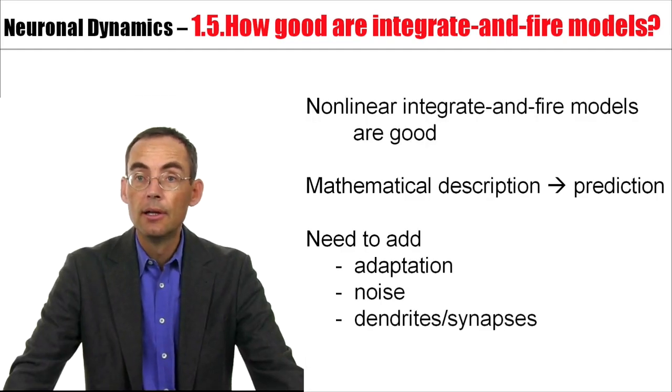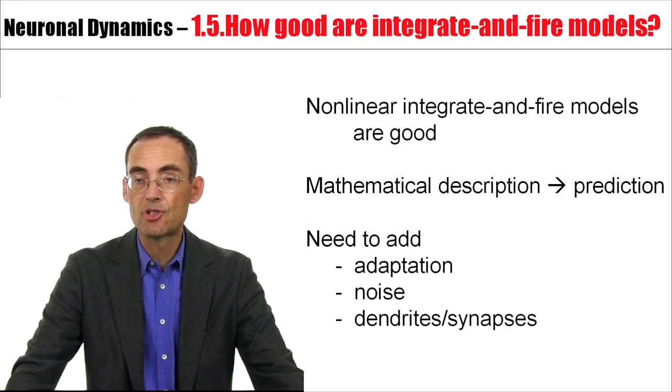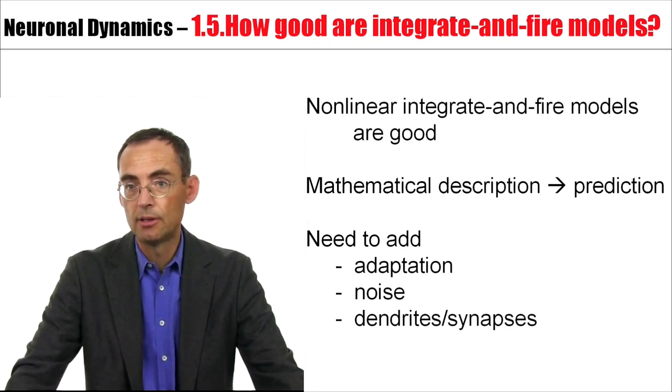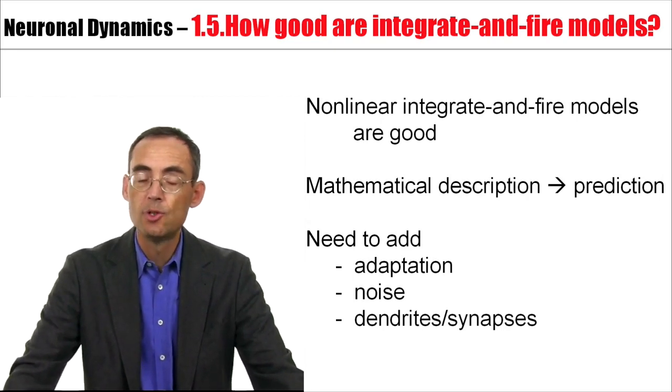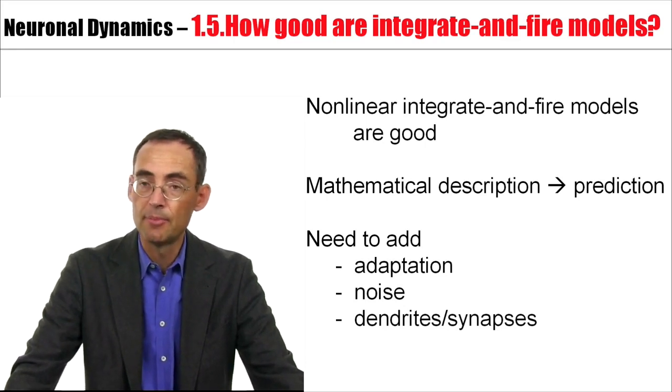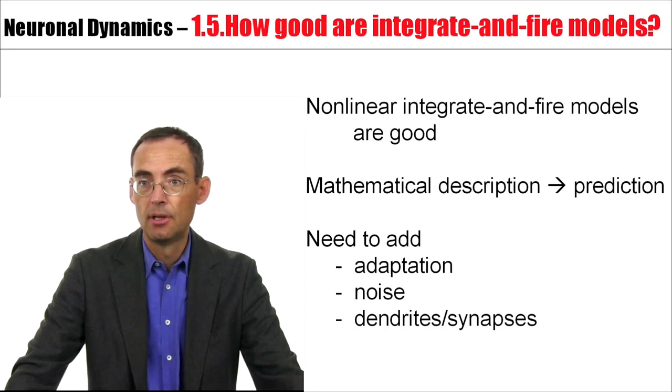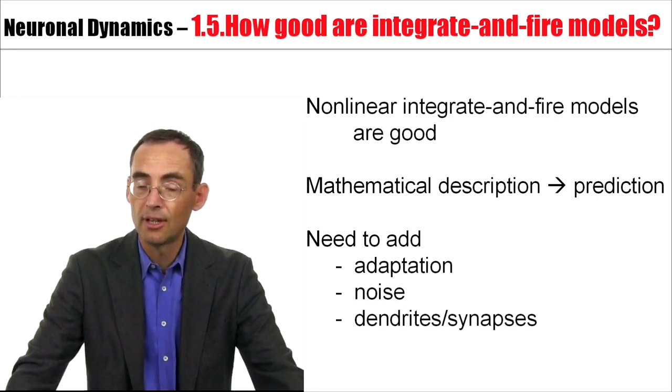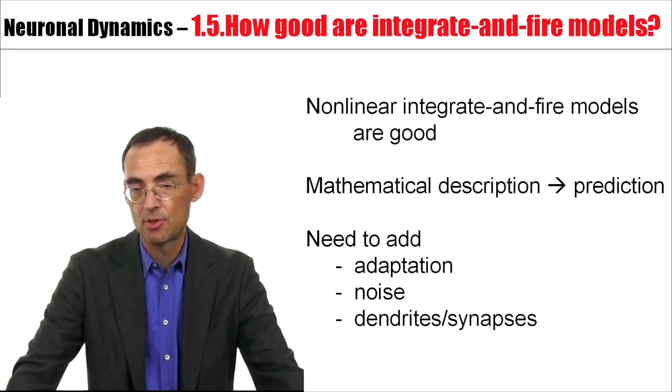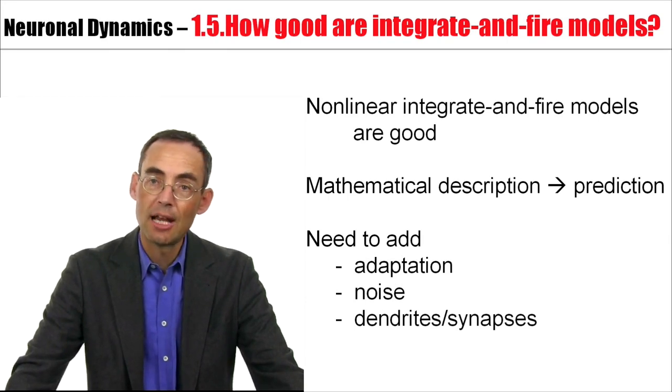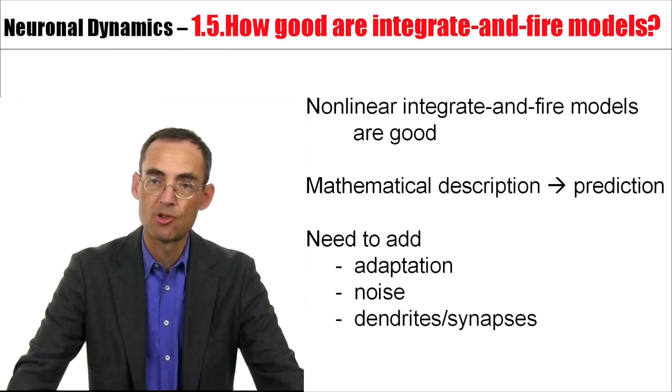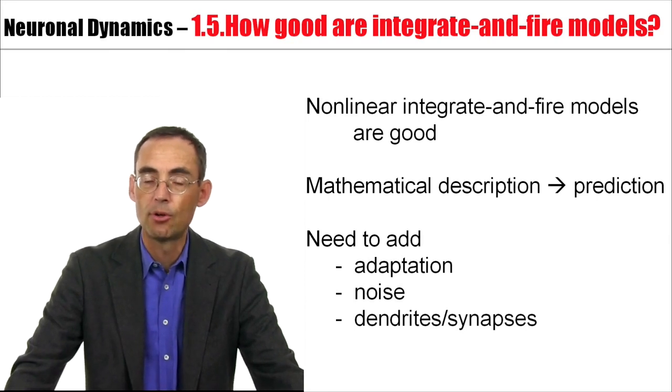Therefore, the simple neuron models that we have studied in this first week are useful. It's useful to invest time into the mathematical development in order to arrive at mathematical models. The mathematical models will allow us to predict spike times of neurons and model the fluctuations of the membrane potential in the presence of a time-dependent input current.